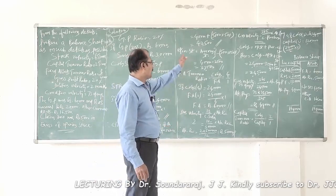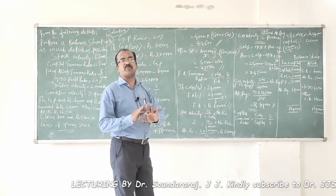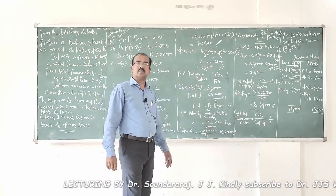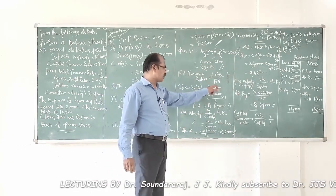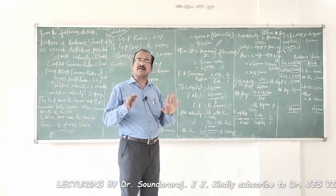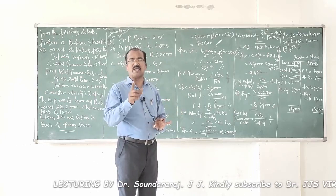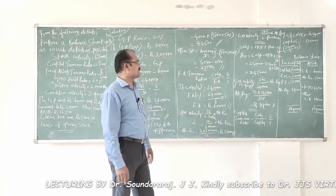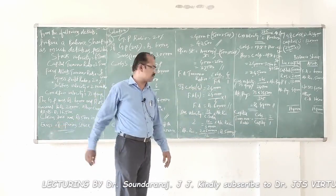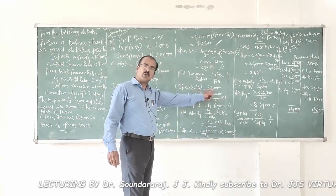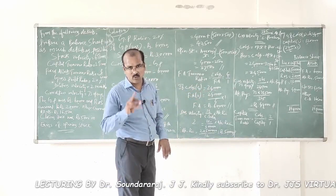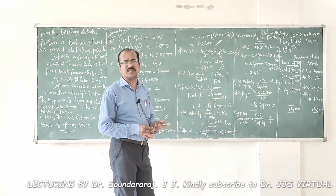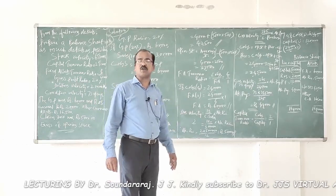Opening stock = Average stock − 50% of the difference = 40,000 − 2,500 = 37,500 rupees. Now let's use the fixed asset turnover ratio. Formula: Cost of Goods Sold ÷ Fixed Assets = 4 (four times). So 2,40,000 ÷ 4 = 60,000 rupees — that is the value of fixed assets.